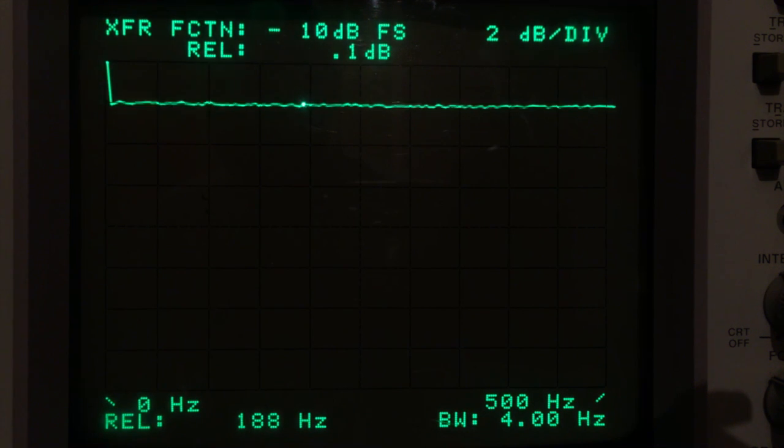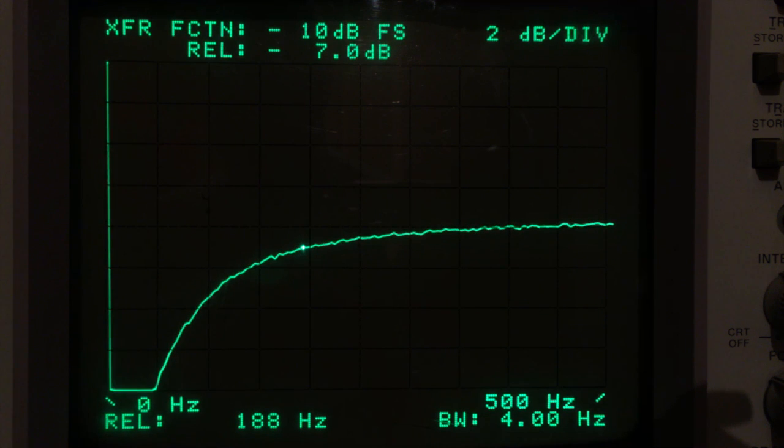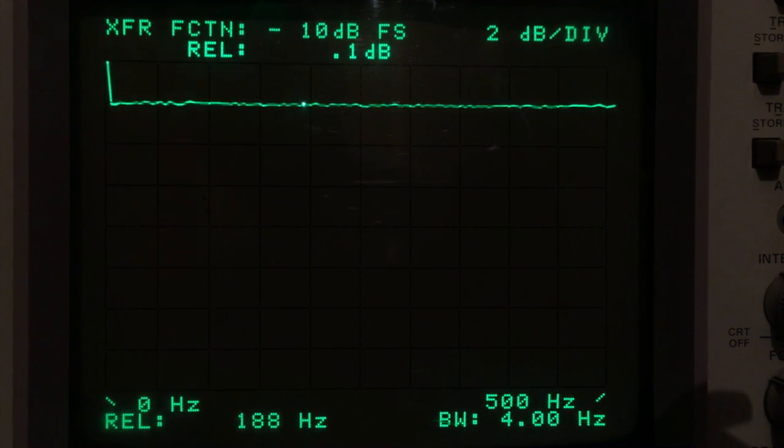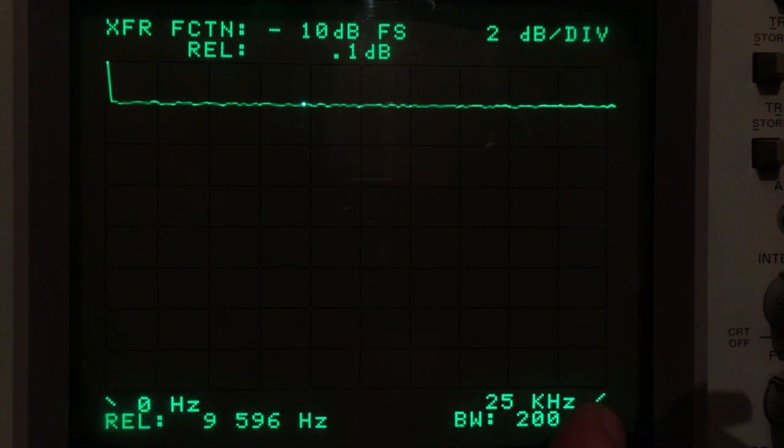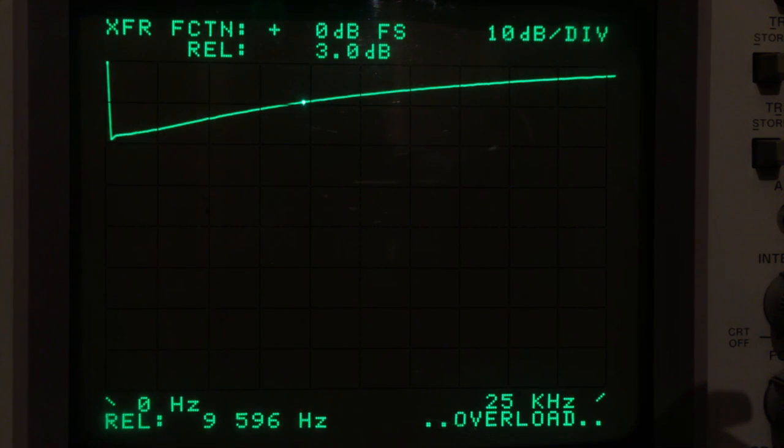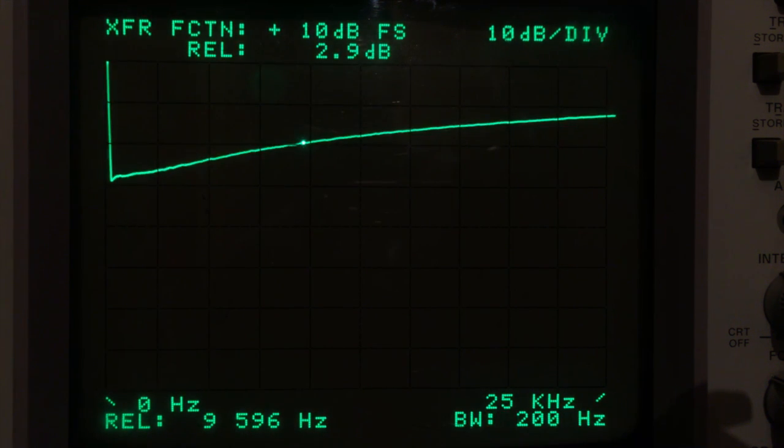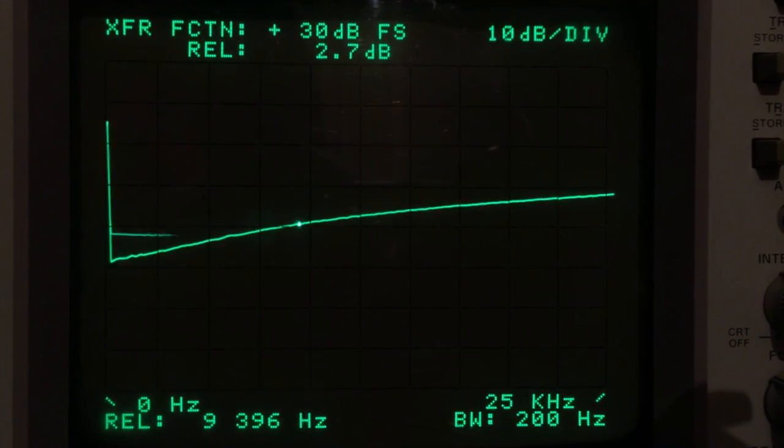OK so let's have a look at the thrust modes. I think we're going to have to change the spectrum analyzer range so now we have 0Hz to 25kHz. Off scale I'm going to change the scale to 10dB per division. OK so that's flat.